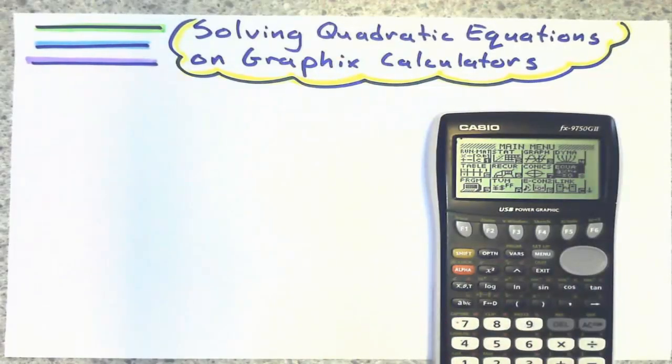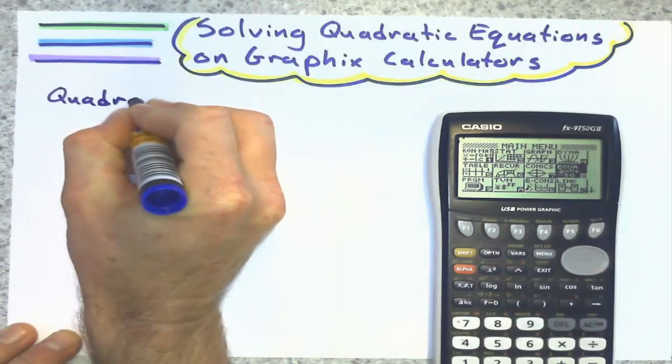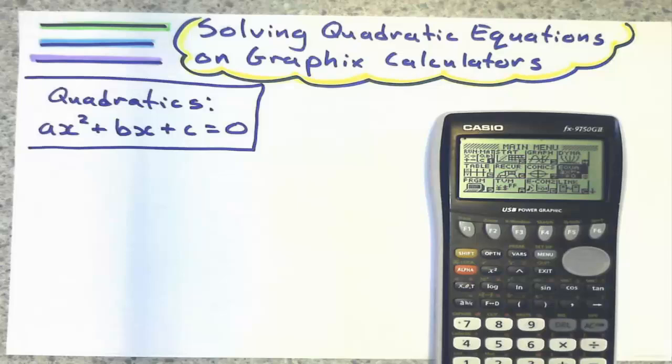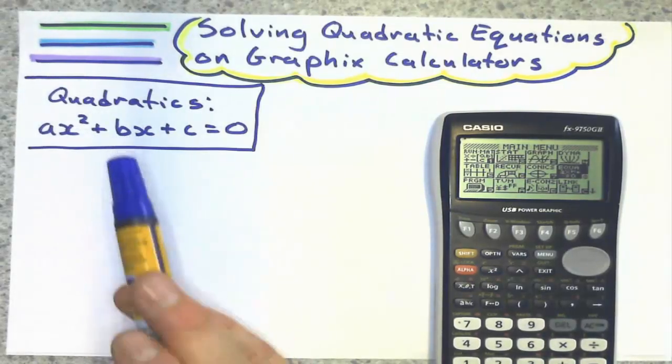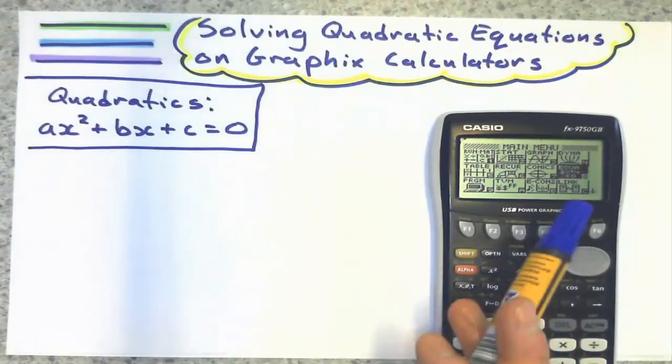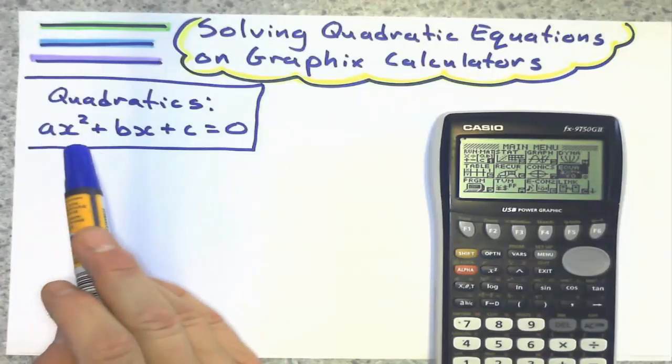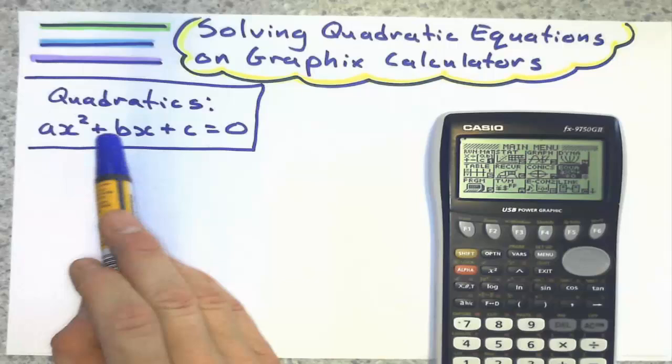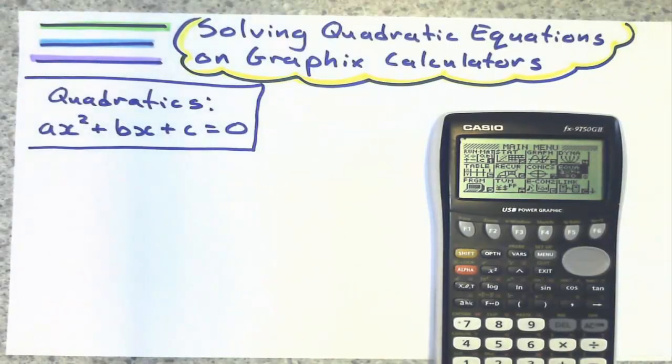Before we do any of that though, quadratics, in order to solve quadratics, they must be in this form no matter what. If we want to factorize them, use quadratic formula, use the calculator, they've got to be set to zero and they've got to be in descending powers of x. So x squared comes first, and then the x term, and then the constant term, the term with no x.